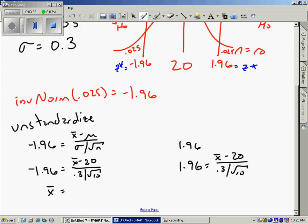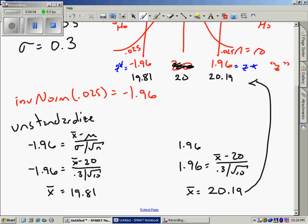So putting these back up here, if the center was 20, then this is 19.81 and this is 20.19. These values on this row are in terms of Z's, and on this row down here below it, these values are in terms of X. In other words, the top row is in terms of standard deviations from the mean and the bottom row is in terms of ounces.